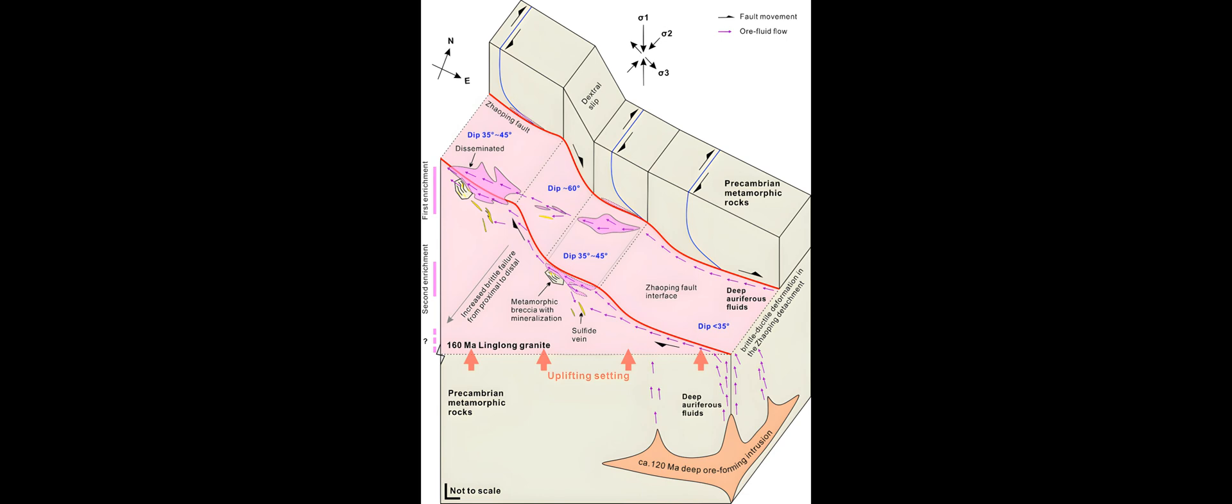Large-scale lithospheric deformation structures correlate with gold endowment, and active structural permeability in the crust is controlled by the prevailing tectonic stress field. There is an increasing body of evidence that the formation of orogenic gold deposits is tied to specific geodynamic settings.